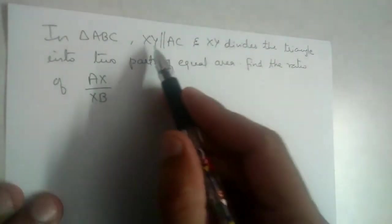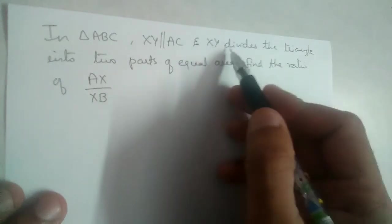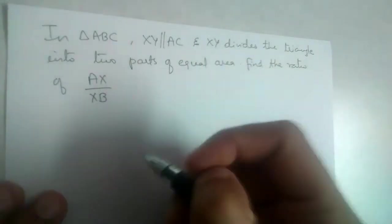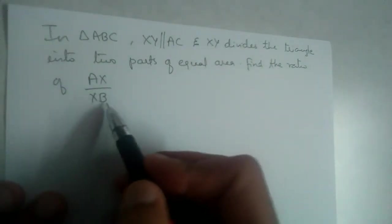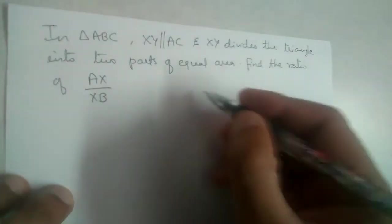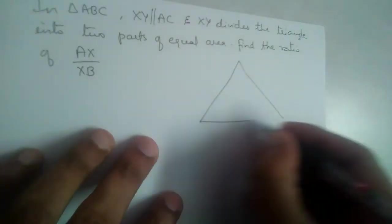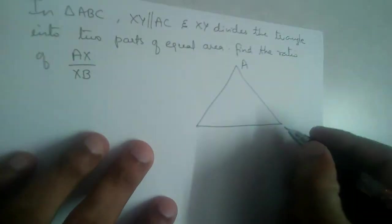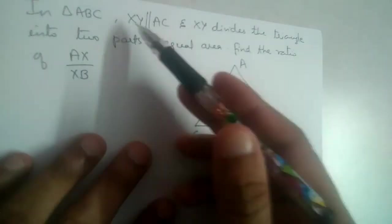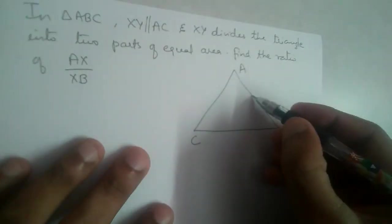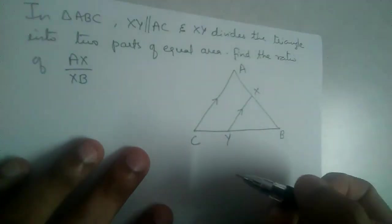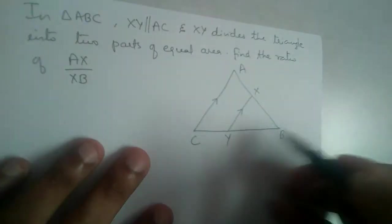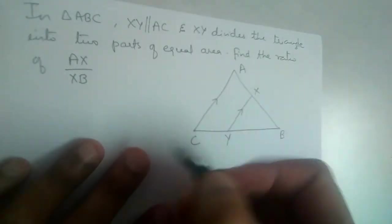In a triangle ABC, XY is parallel to AC and XY divides the triangle into two parts of equal area. We need to find the ratio of AX to XB. Note that in some problems AX to AB is given, but here AX to XB is asked. We have triangle ABC, and XY is parallel to AC, so these two lines are parallel to each other, and XY is dividing ABC into two parts of equal area.